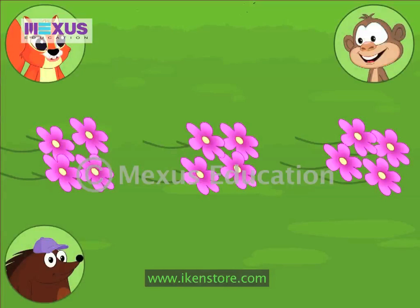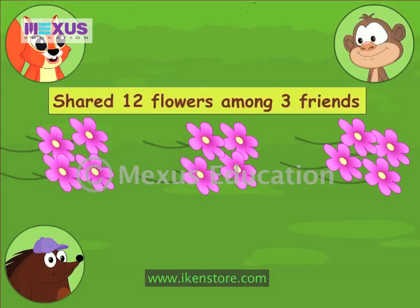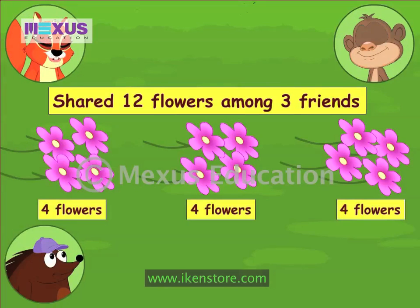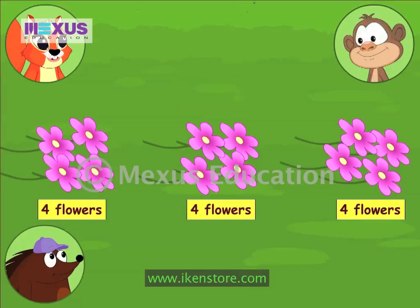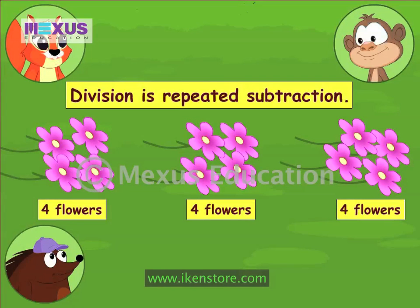Thanks, Amber. Let's pick it up. We shared twelve flowers between the three of us and now we have four flowers each. That reminds me of something my mother was teaching me the other day — it's called division. What we just did is we took away three flowers at a time from the pile. We did this four times.